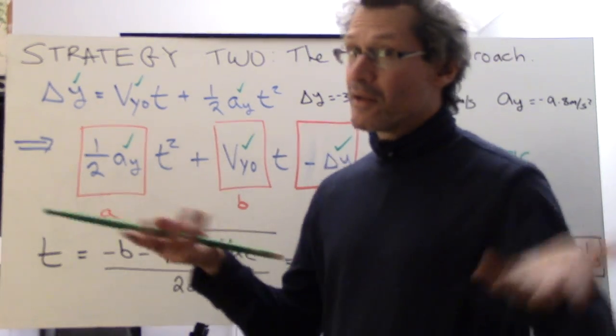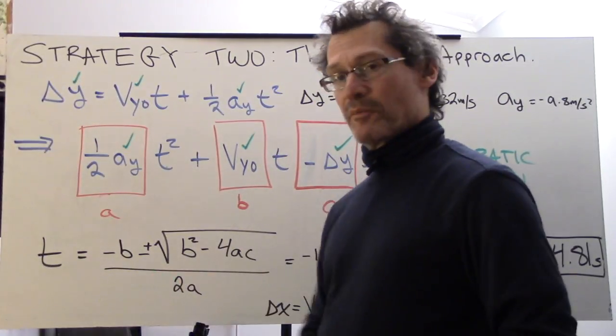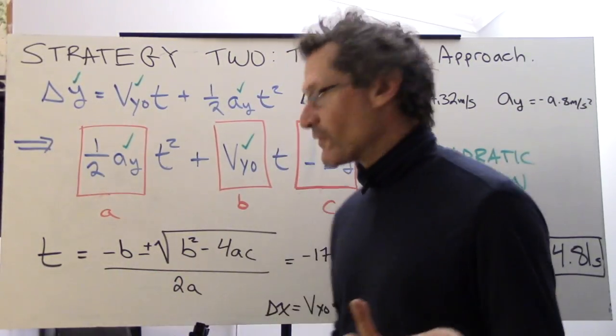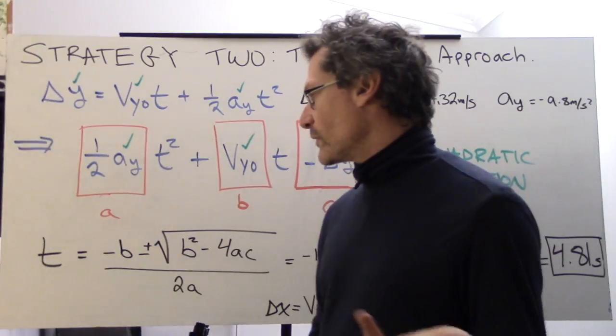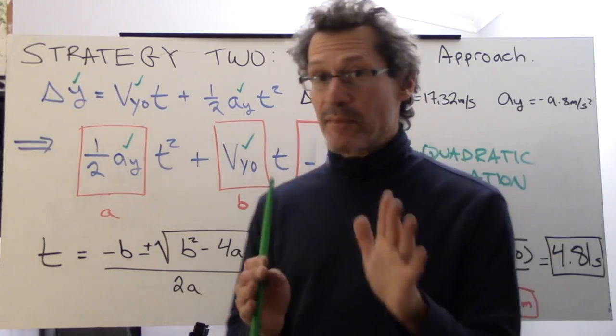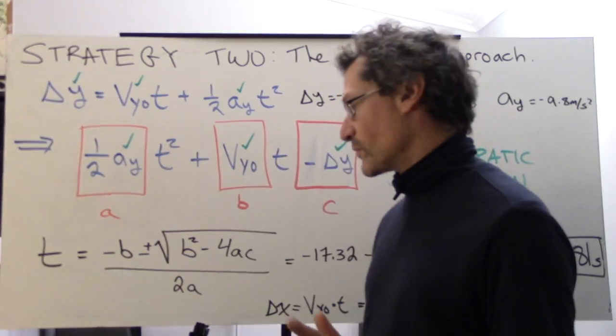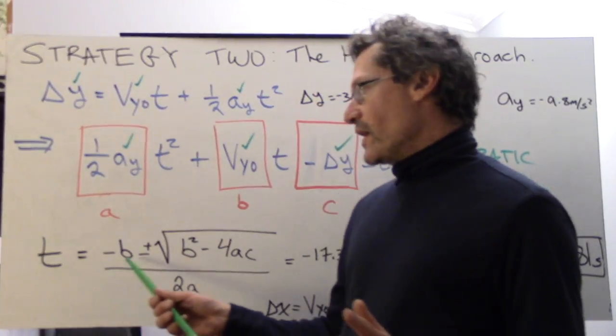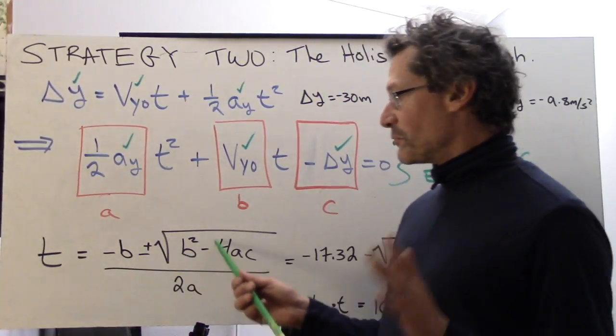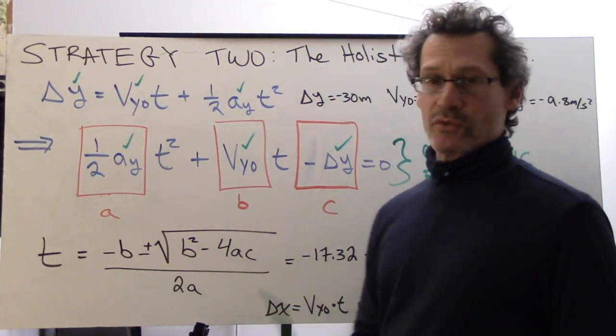You might remember this from algebra one, perhaps algebra two: t equals minus b plus or minus the square root of b squared minus 4ac over 2a. Very useful here.